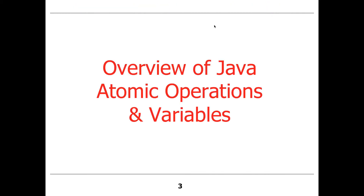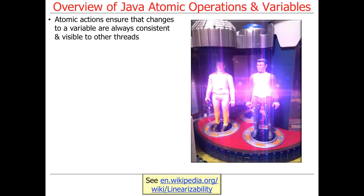We'll first start by talking about Java atomic operations and atomic variables. Just a quick recap: atomicity really means things are consistent and visible to other threads when they're done. There's another name sometimes used — linearization — though that's the name it shows up under on Wikipedia. But really, this is what atomicity is about.